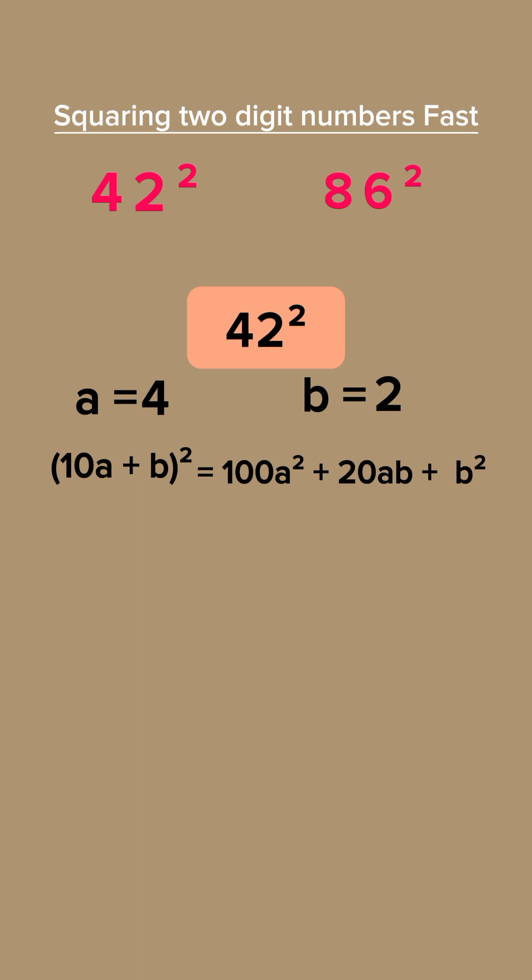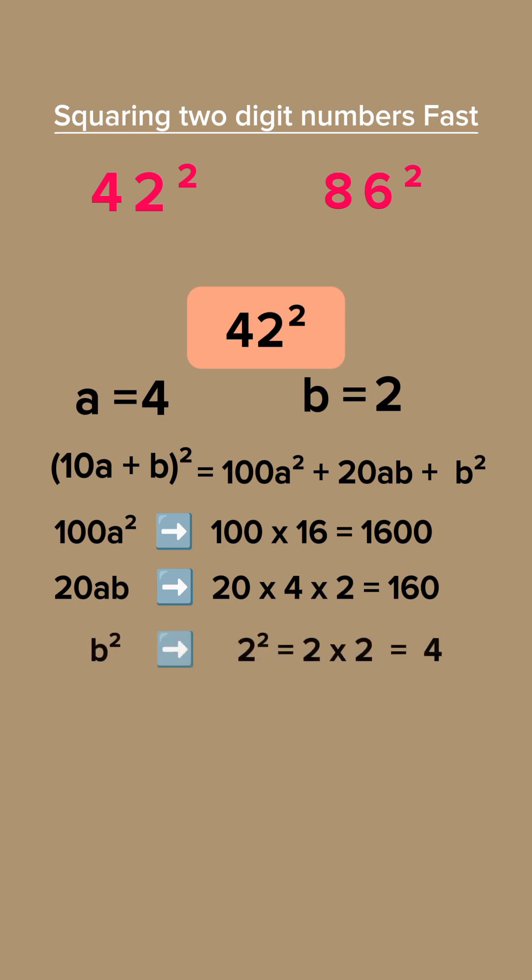When expanded... Step 1: 4 squared equals 16. 100 times 16 equals 1,600. Step 2: 20AB, 20 times 4 times 2 equals 160. Step 3: B squared, 2 squared equals 4. Now add them all: 1,600 plus 160 plus 4 equals 1,764. So, 42 squared equals 1,764.